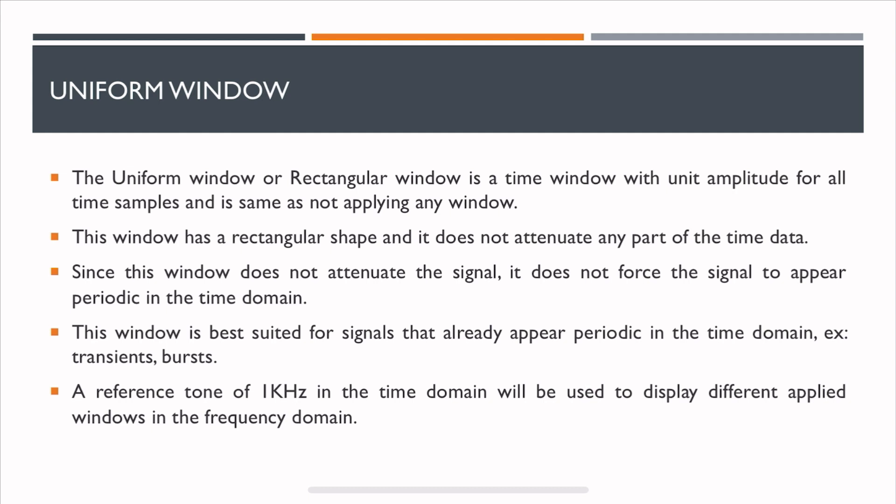There are different types of windows. First, let's start with the uniform window. The uniform window, also known as a rectangular window, is a time window with unit amplitude for all time samples and is as good as not applying a window at all.